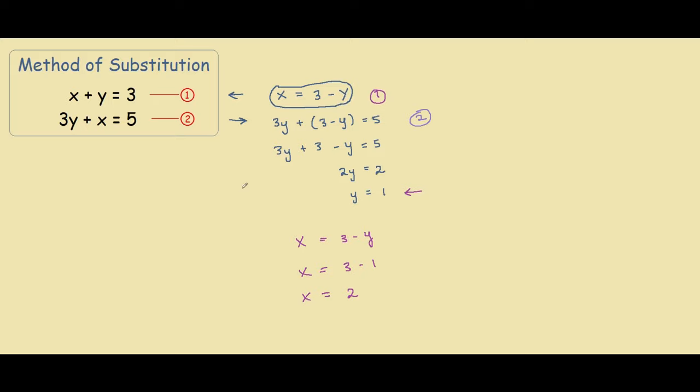So the answer to this problem is that x equals 2 and y equals 1. Quickly glancing at the equation, you can see that this is true. 2 plus 1 equals 3. And 3 times 1 is 3 plus 2 equals 5.